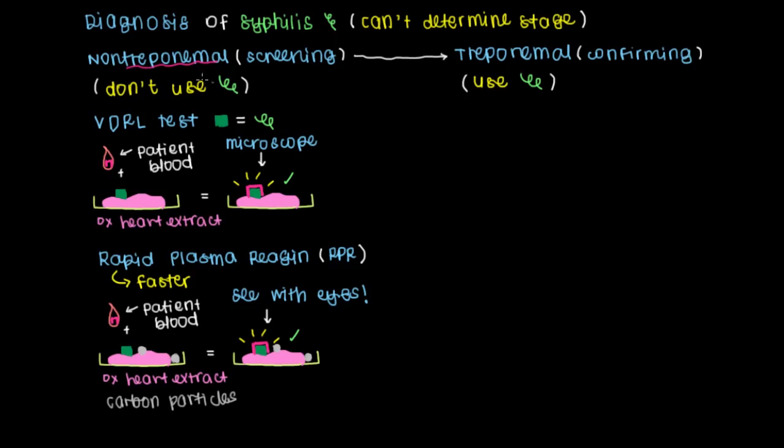Overall, both of these tests, these non-treponemal tests, tend to have high sensitivity, meaning they're unlikely to have false negatives. But they have low specificity, which means that it's possible that a positive test may be wrong or false, as you might guess from using the ox heart extract rather than the actual protein from treponemes.